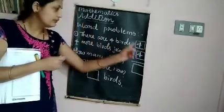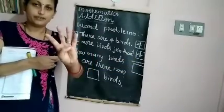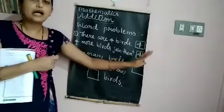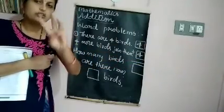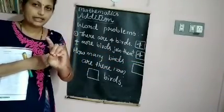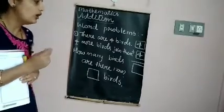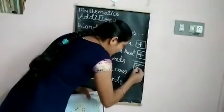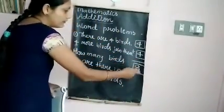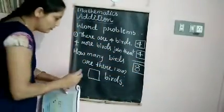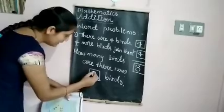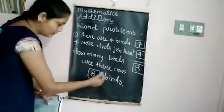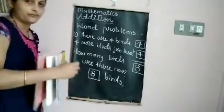Keep four in your mind and four fingers in your hand. Count on: four, then five, six, seven, eight. How many birds are there now? Eight. Write eight in the box. So four plus four is eight — there are eight birds.